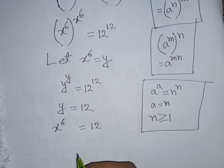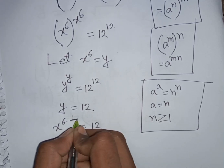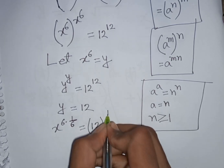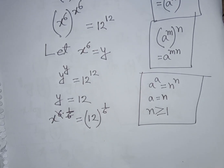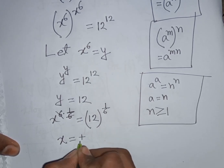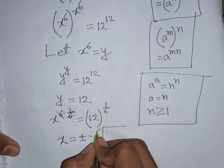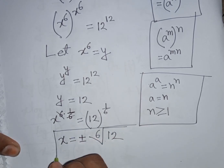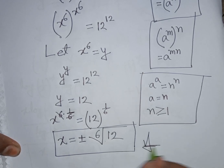To find x, we raise both sides to the power of 1/6. This gives x = ±12^(1/6), which can be written as ±⁶√12. So x = ±⁶√12 is our final answer.